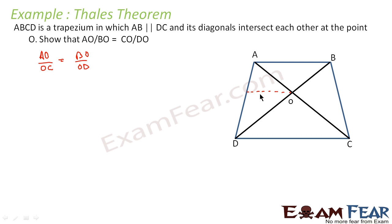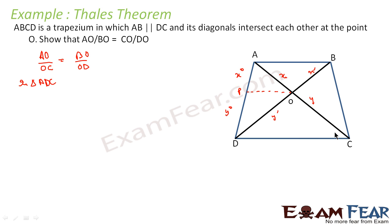Let's suppose AO is X, OC is Y, BO is X-dash, and OD is Y-dash. Now in triangle ADC, PO is parallel to DC. So this segment is X and this is Y, making the corresponding segments X-dash and Y-dash by the Basic Proportionality Theorem. I can say that X by Y is equal to X-dash by Y-dash, since PO is parallel to DC.